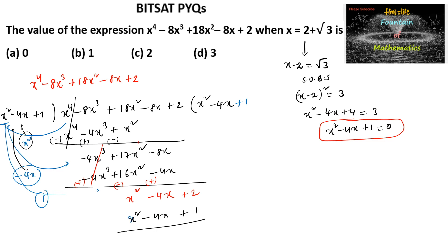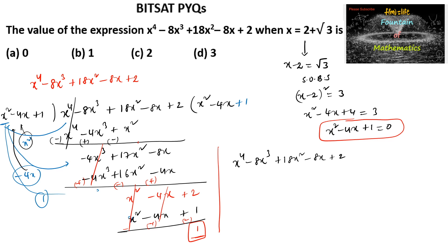After subtraction, 2 minus 1 gives remainder 1. So we can write: x power 4 minus 8x power 3 plus 18x square minus 8x plus 2 is equal to x square minus 4x plus 1, multiplied by the quotient x square minus 4x plus 1, plus remainder 1.